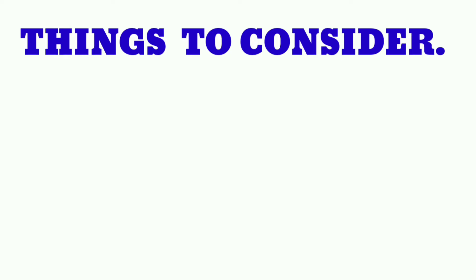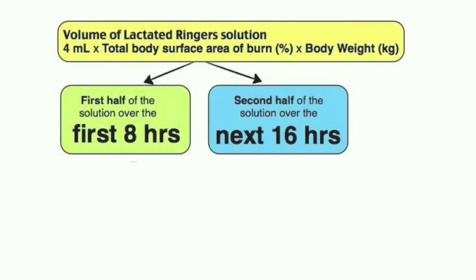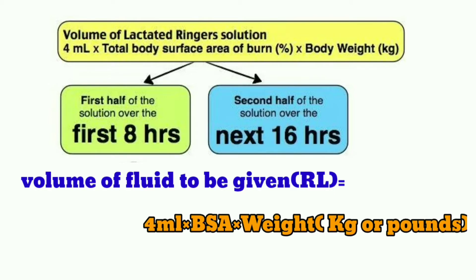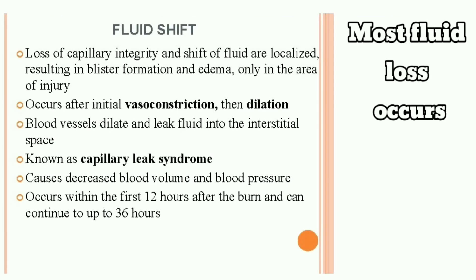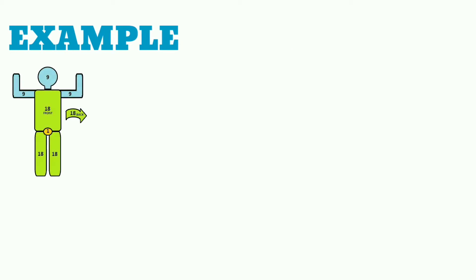Things to take into consideration: the weight of the patient and the burn percentage. The Parkland's formula is: volume of fluid = 4 mL × %BSA × weight in kilograms. The volume obtained is administered as follows: for the first eight hours since the burn occurred, the patient receives half the total volume; the remaining half is given over the next 16 hours. Most fluid loss occurs between 8 and 12 hours after the burn, which is the rationale for this schedule.